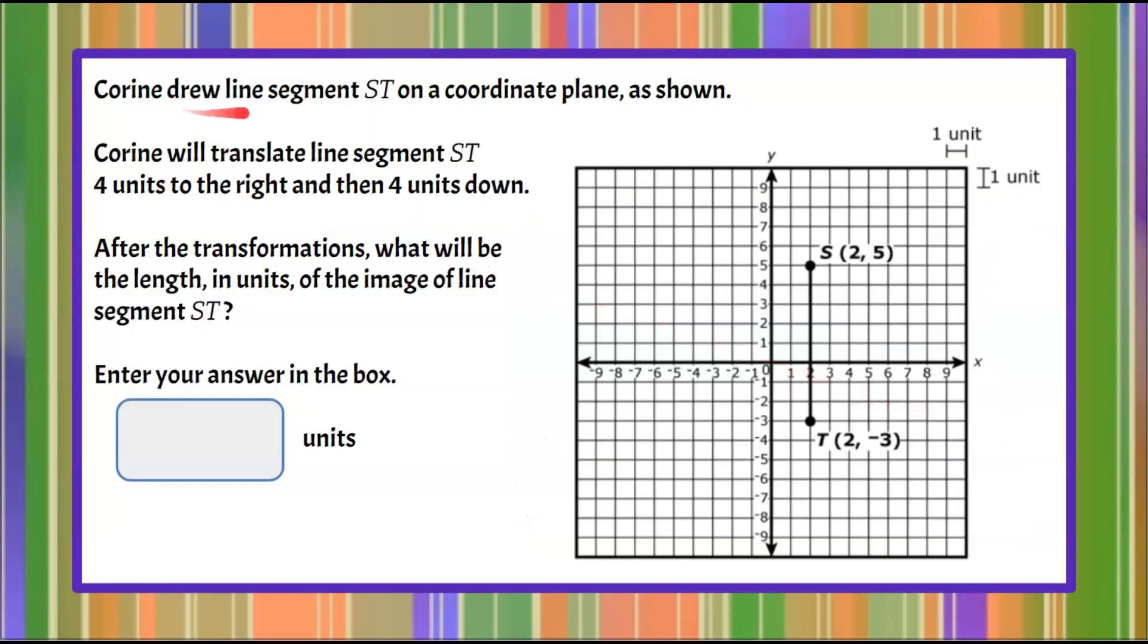We have Corinne who drew a line segment ST on a coordinate plane as shown. Corinne will translate line segment ST four units to the right and then four units down. After the transformations, what will be the length in units of the image of the line segment ST? Enter your answer in the box.